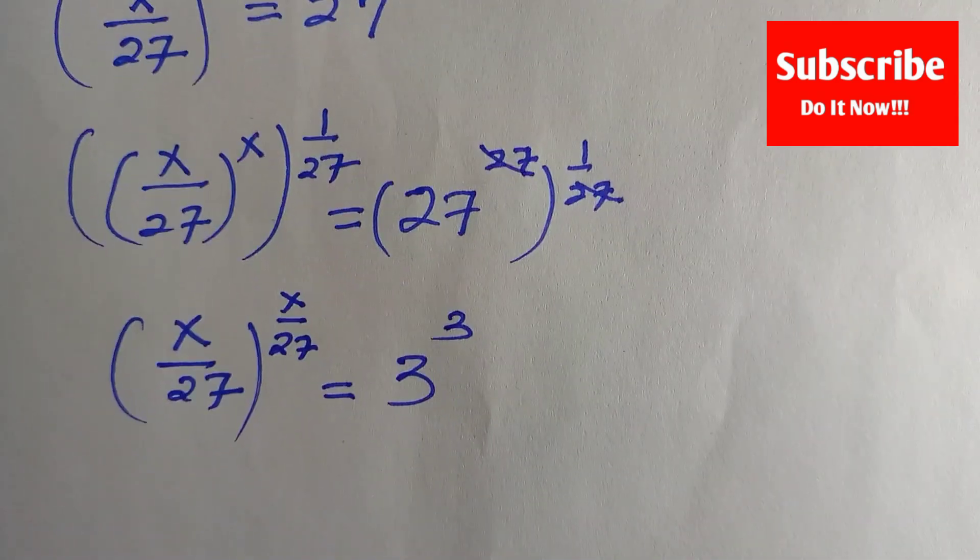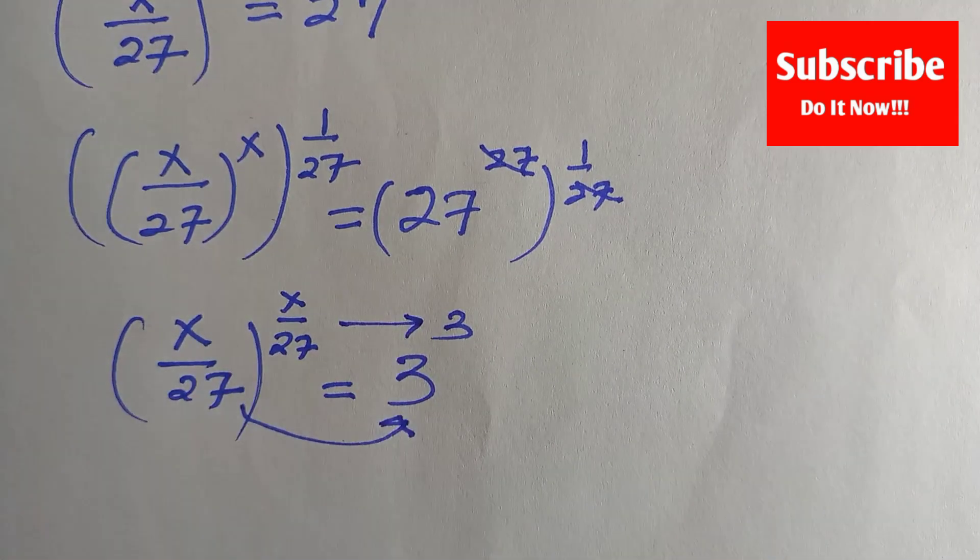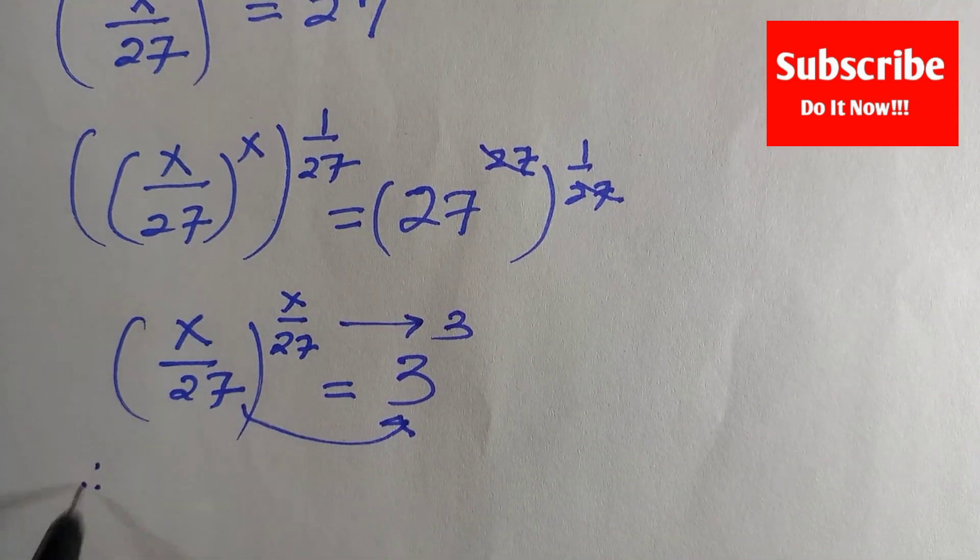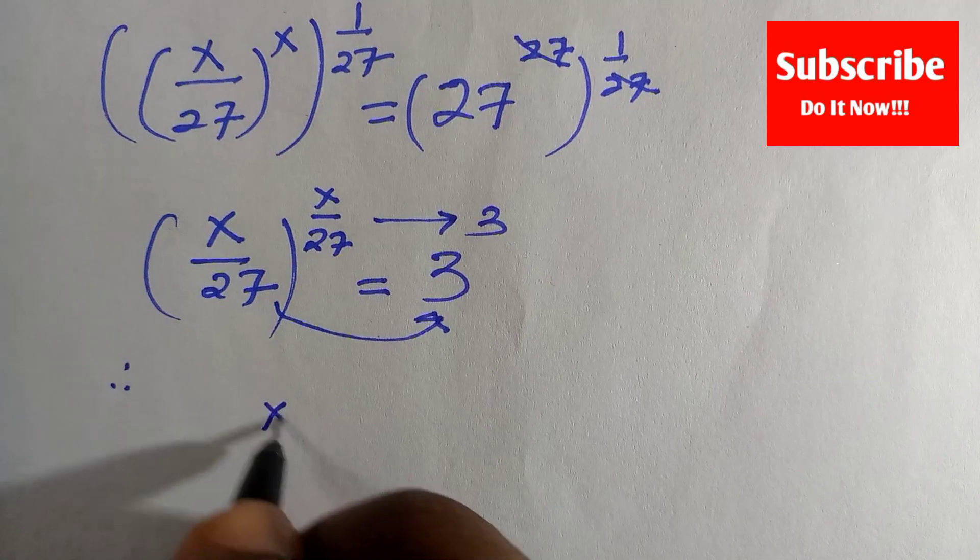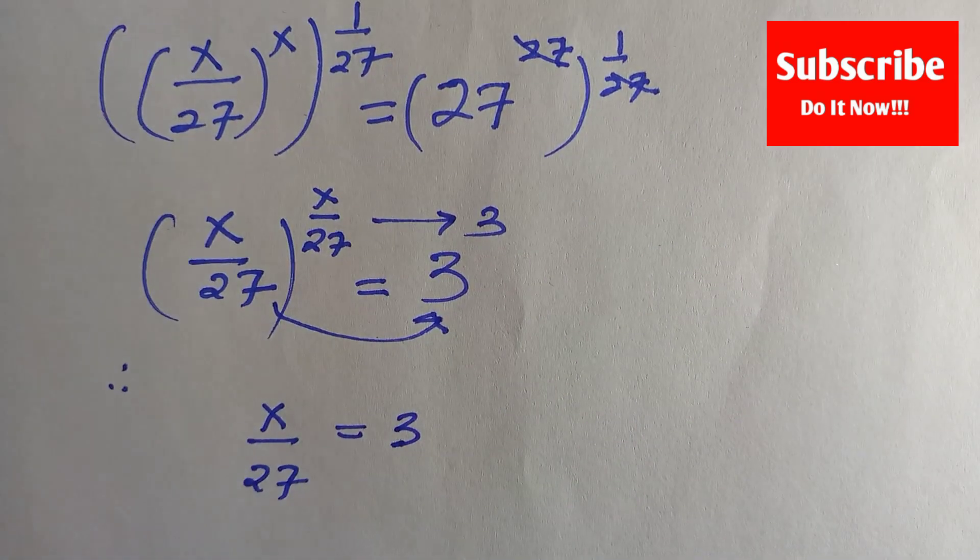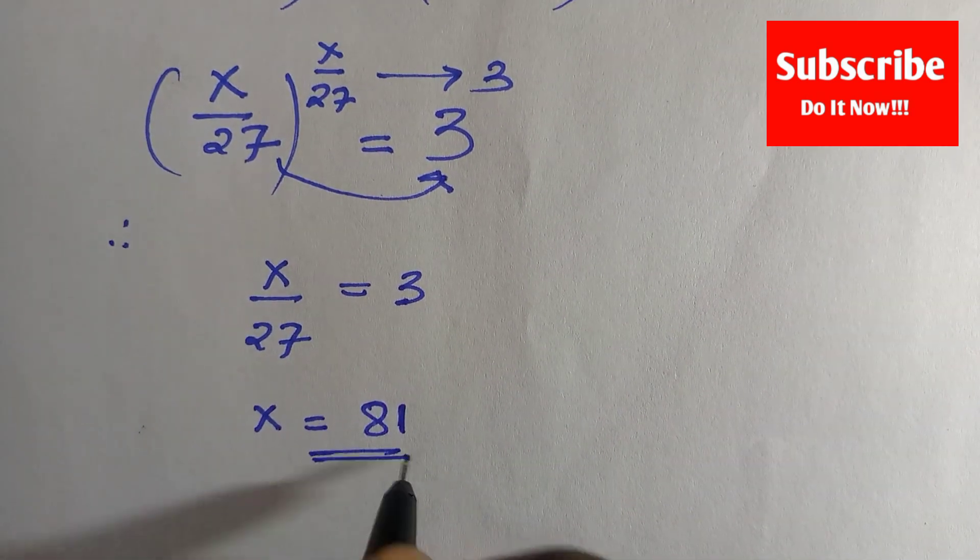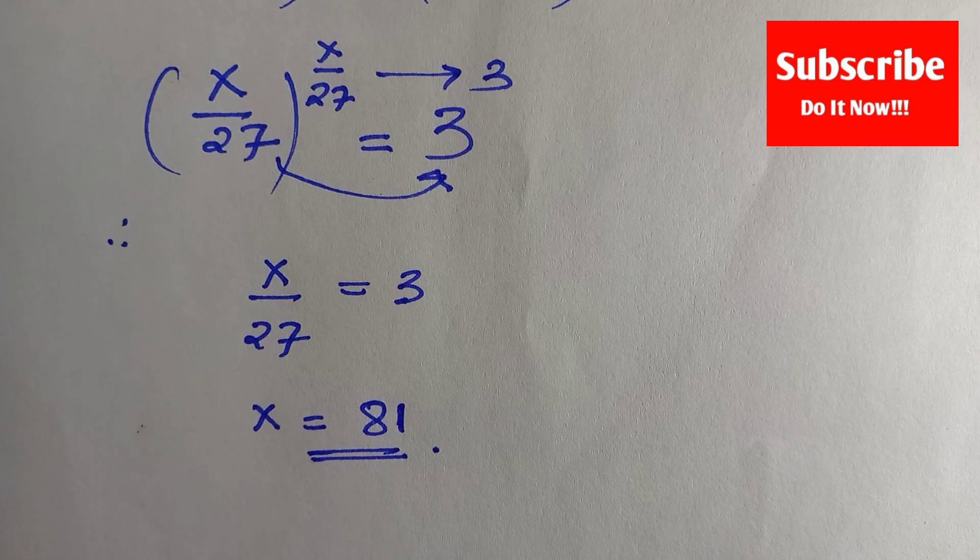You can conclude that x/27 equals this. We compare the power and the base, so we can conclude that x/27 = 3, and therefore x = 81. 81 is the satisfied value of x for this equation.